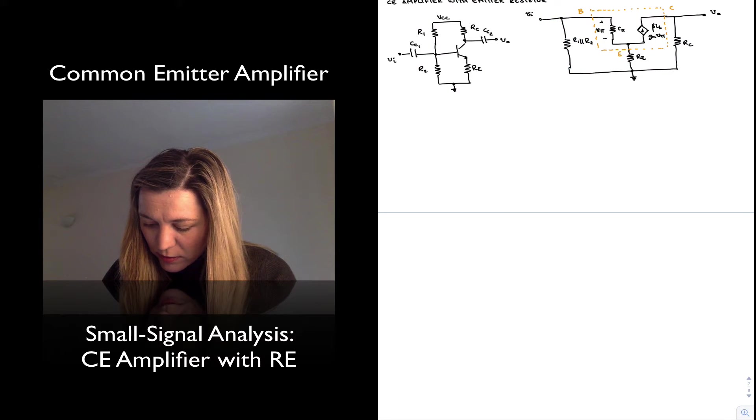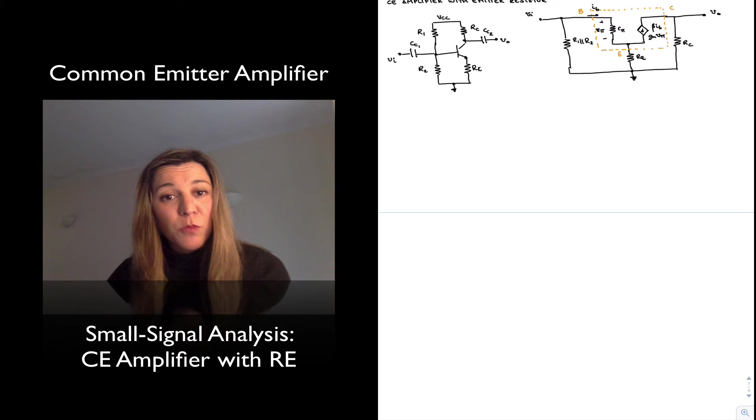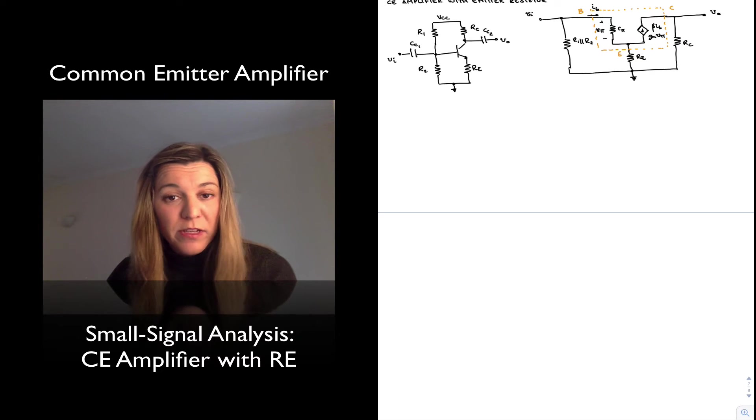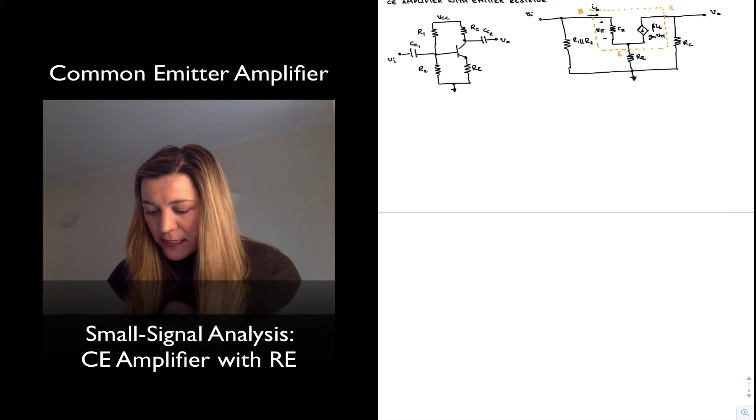This will be the base, collector, emitter terminals, and this will be my I_B current. Notice that I'm using small signal denominations for my different parameters, for my different quantities, so lowercase and lowercase subscript. Okay, so I think we are ready to start our analysis.